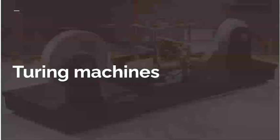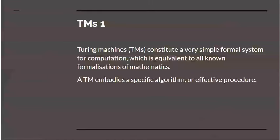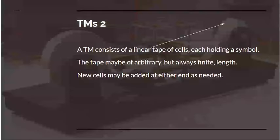To get to grips with Turing's result, we'll introduce the Turing machine. I have actually had lectures on the Turing machine before. Here's a picture of one. They are very simple formal systems that can do computation and they're equivalent to any known formalization of mathematics. A given Turing machine embodies a specific algorithm or what we would call an effective procedure for calculating something. The machine consists of a linear tape. On that tape are cells. Each cell holds a symbol. The tape may be of arbitrary length but always finite length. And new cells can, in principle, be added to either end as needed.